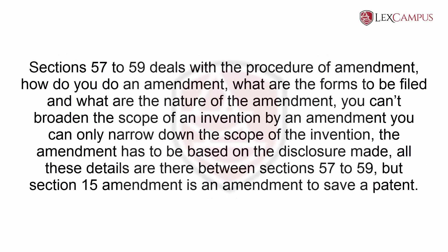Sections 57 to 59 deal with the procedure of amendment — how do you do an amendment, what forms are to be filed, and what is the nature of the amendment. You cannot broaden the scope of an invention by an amendment; you can only narrow down the scope of the invention. The amendment has to be based on the disclosure made. All these details are covered between Sections 57 to 59.